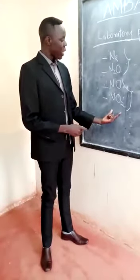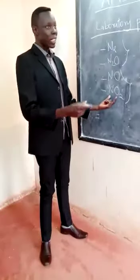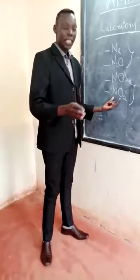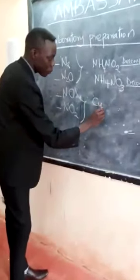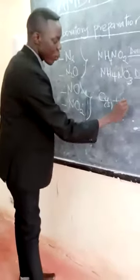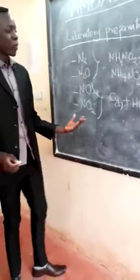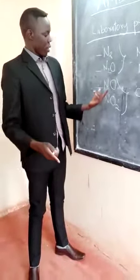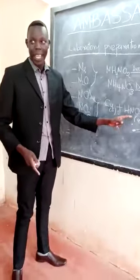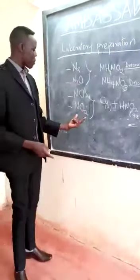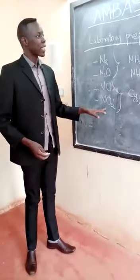Now let me tell you how we can prepare nitrogen 2 oxide, also called nitrogen monoxide, and nitrogen 4 oxide, also called nitrogen dioxide. We use the same reaction but there is something that differs. In both cases we require copper metal reacted with nitric acid. But when preparing nitrogen 2 oxide, we use dilute nitric acid, and when preparing nitrogen 4 oxide, we use concentrated nitric acid.